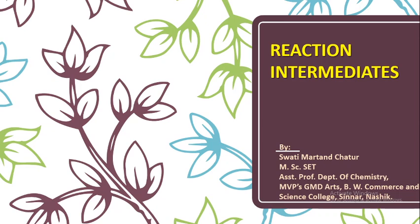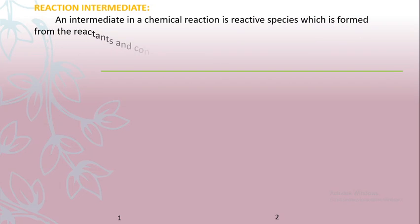In this lecture, I will be focusing on reaction intermediates. First of all, what are intermediates? An intermediate in a chemical reaction is a reactive species which is formed from the reactant and converted to the product. As we know, in organic synthesis there are many reactions, and reactions via intermediates are more common. There are also some reactions which proceed via the transition state.